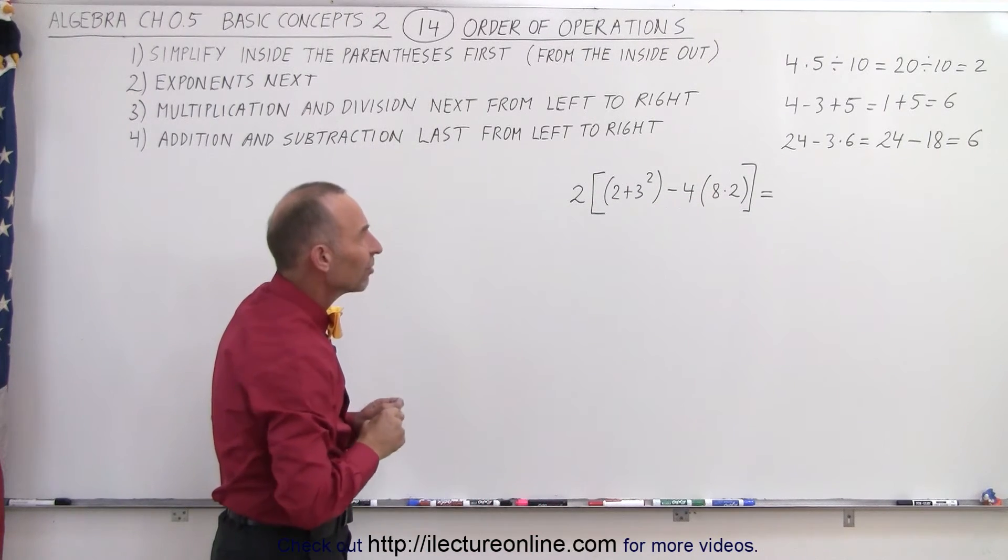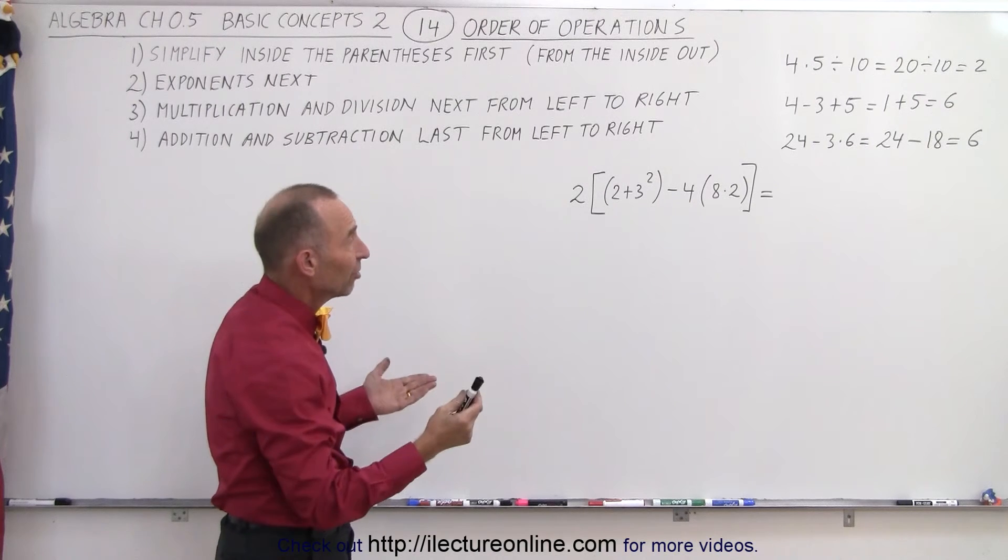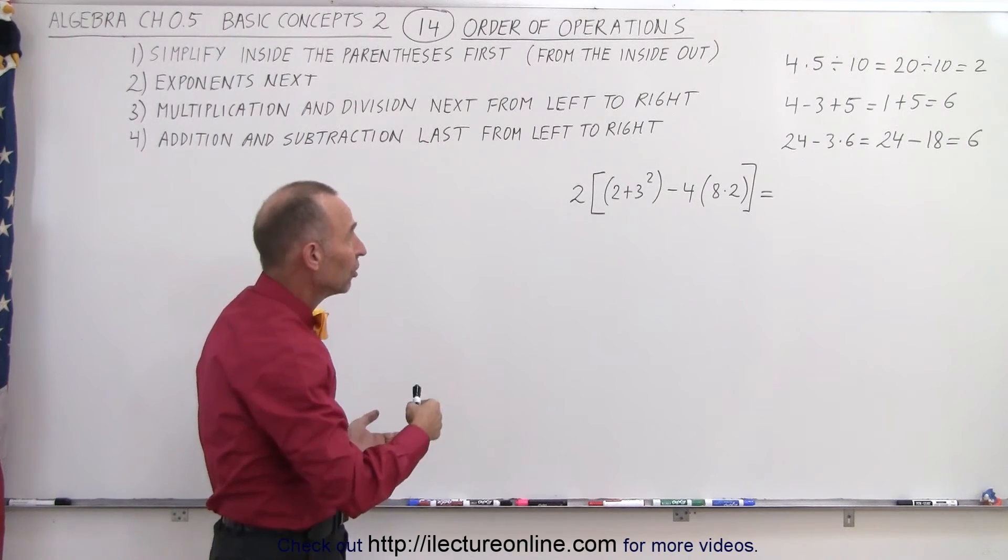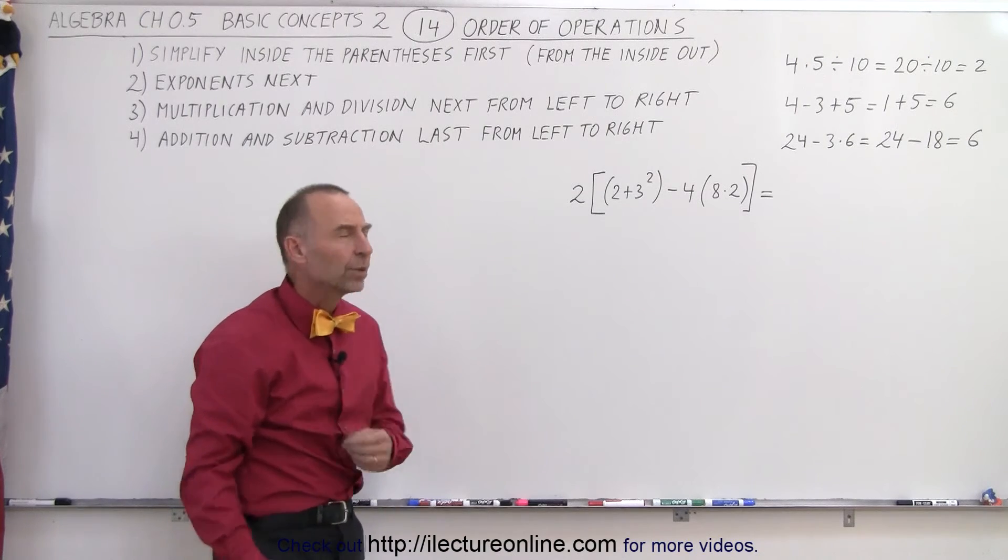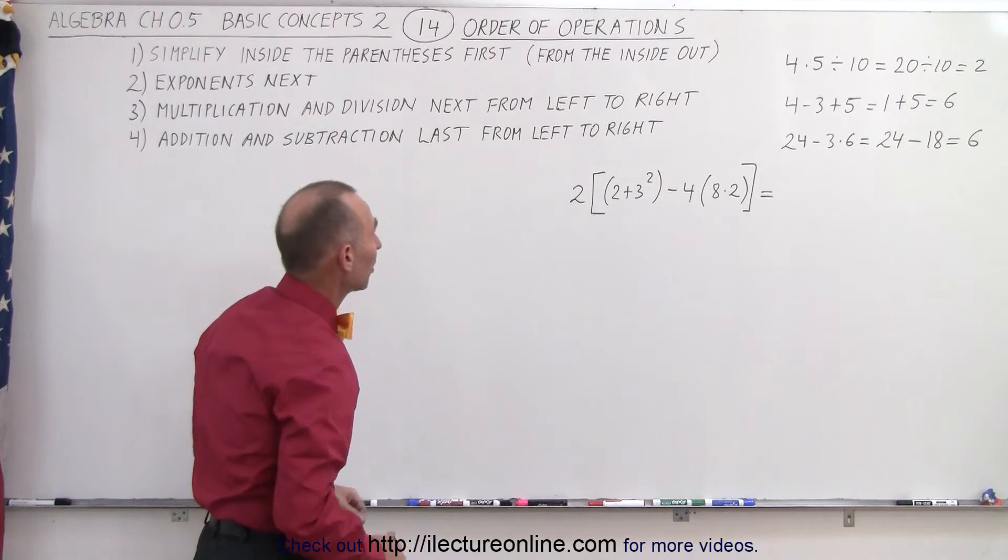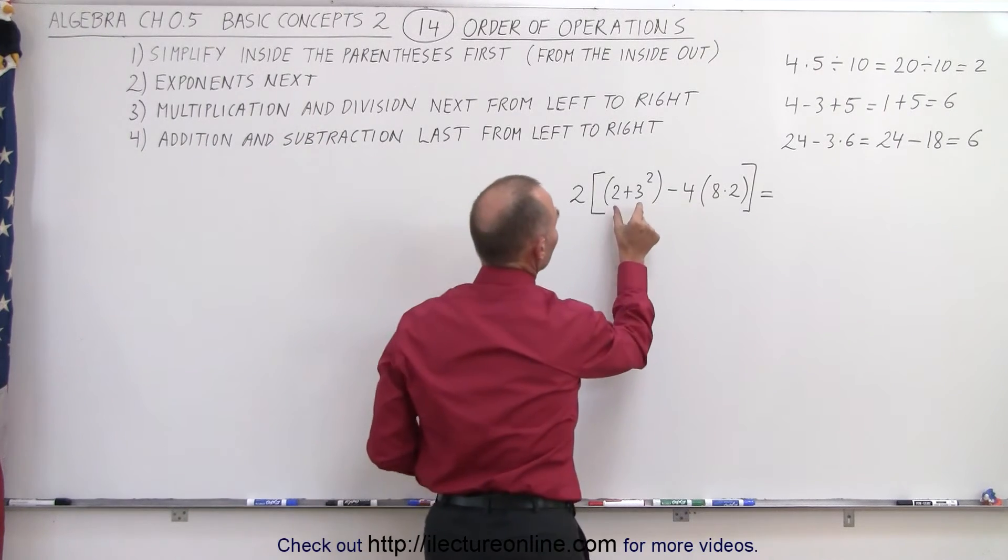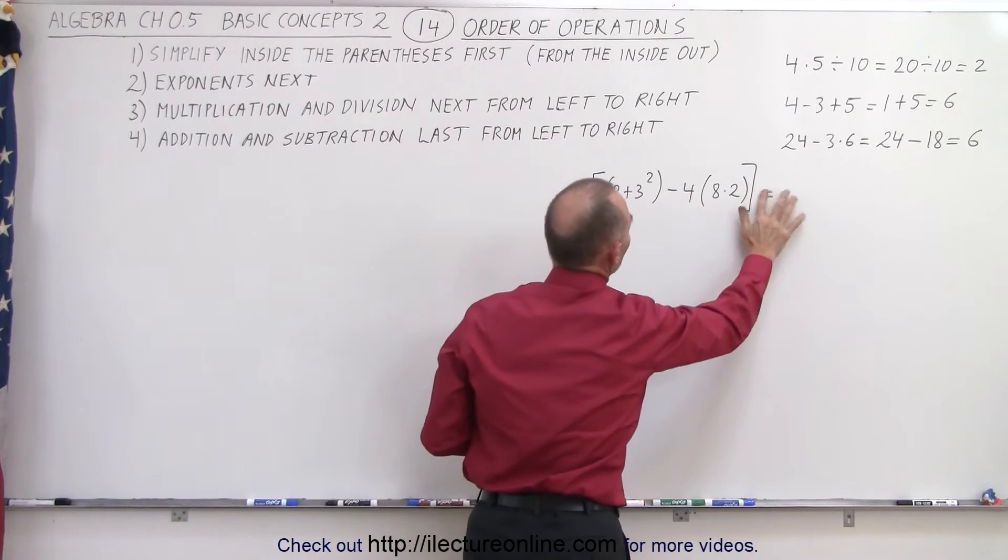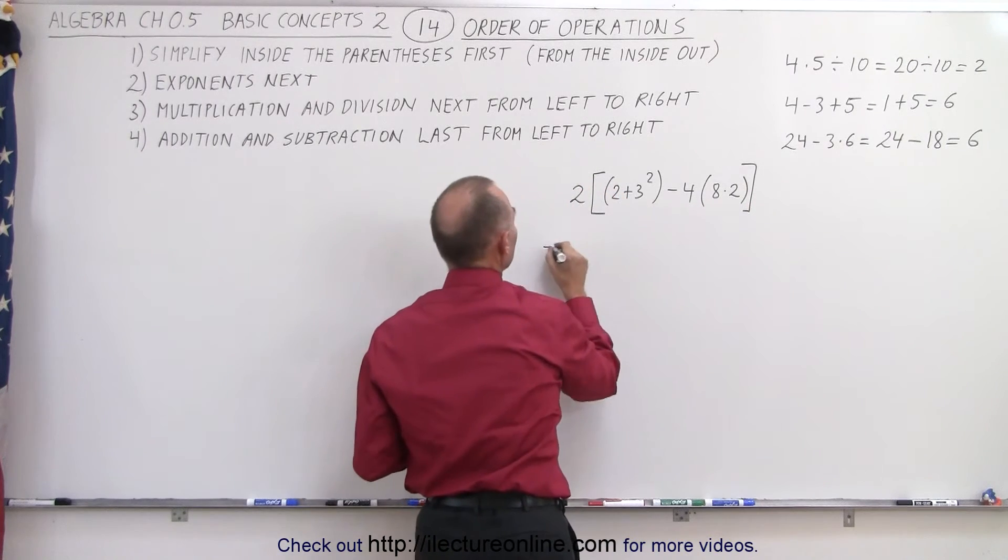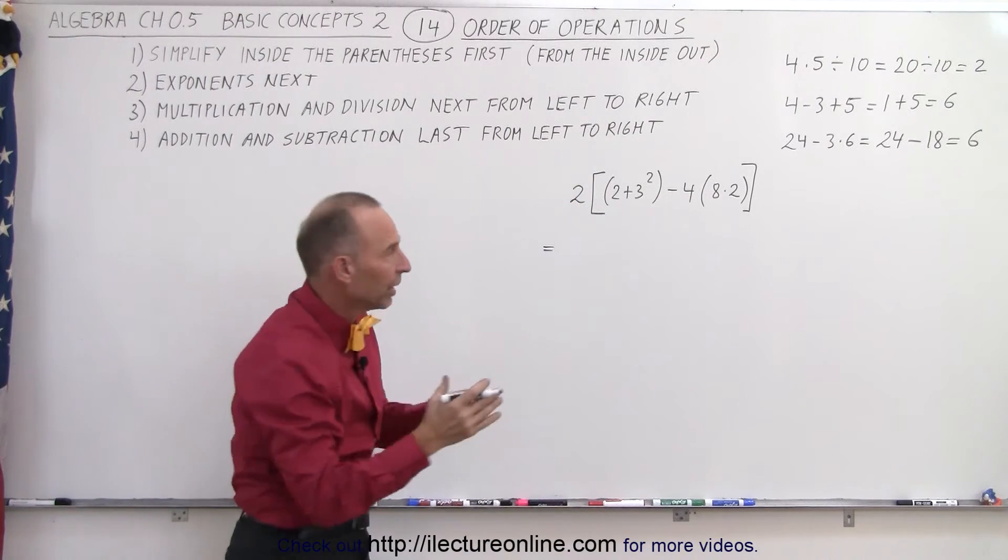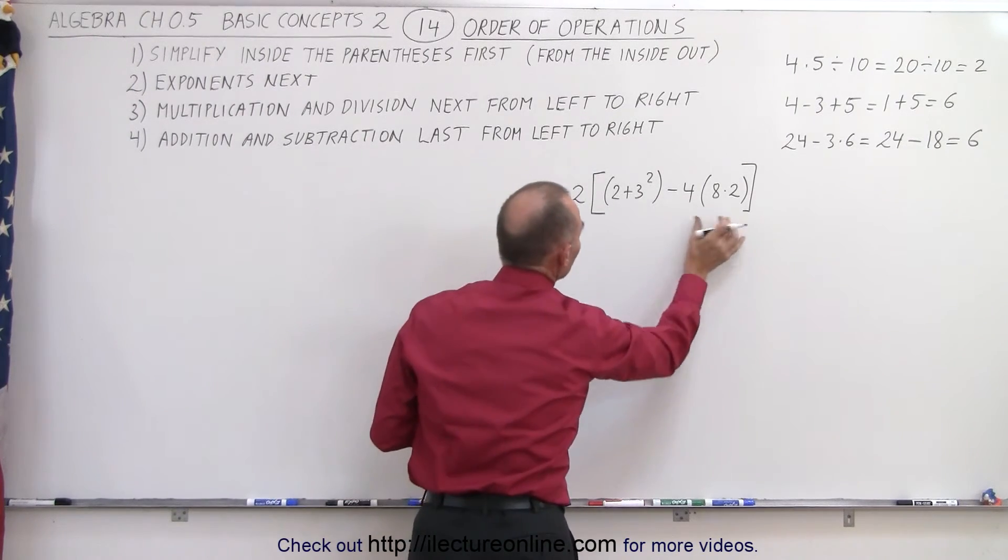So notice our next exercise is a little bit more complicated. We have parentheses, we have brackets, we have exponents, multiplication, addition, and subtraction. So how do we deal with that? The rule says, first we simplify what's inside the parentheses, so we must work out what's inside here, and what's inside there, and leave everything else alone. So let's take that equal sign, and move it over here. So we repeat everything that's on the board, and then we work out what's inside the parentheses first.